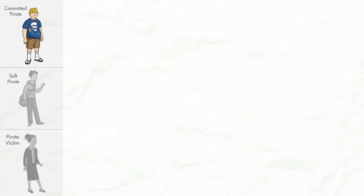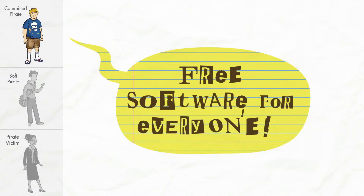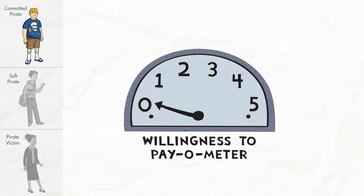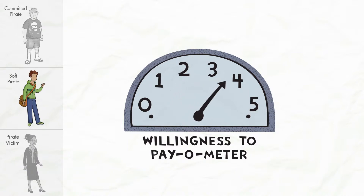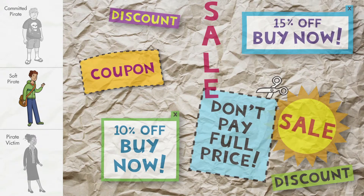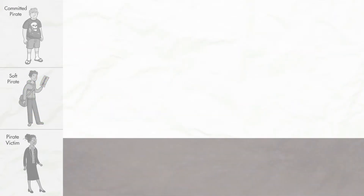First, you have your committed pirates, who think all software in the world should be free. They know they are using unlicensed software and have no motivation or intention to pay. So let's ignore them and focus on the unlicensed users who will become paying customers. Soft pirates are bargain hunters looking to find a deal. They're willing to take a chance, knowing that they might end up with counterfeit software.